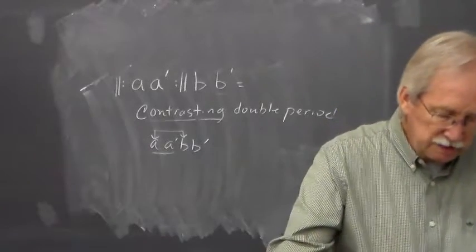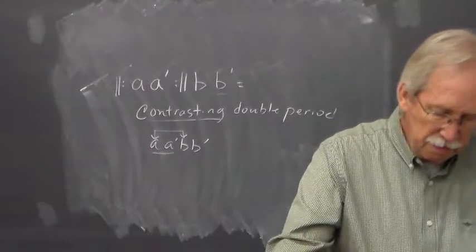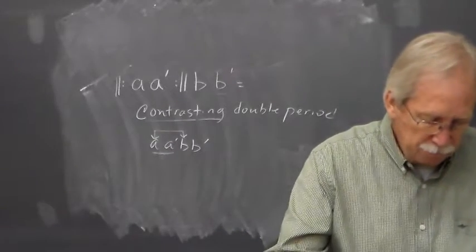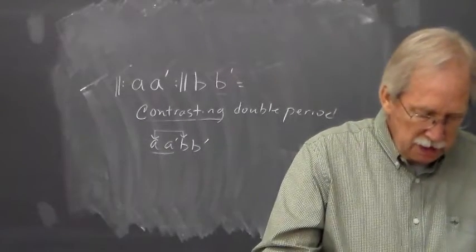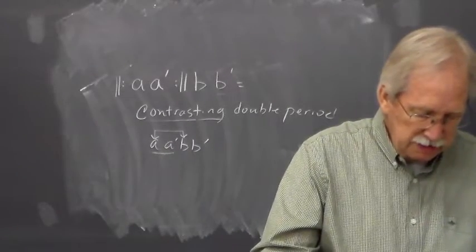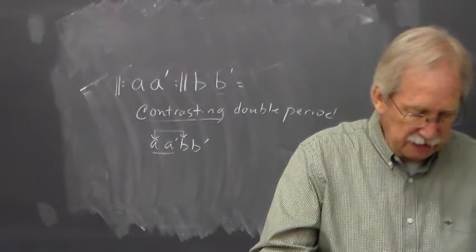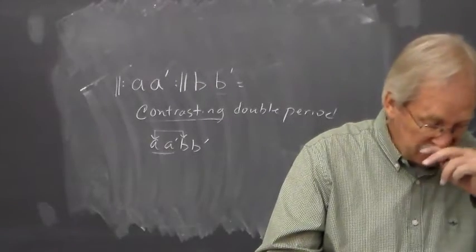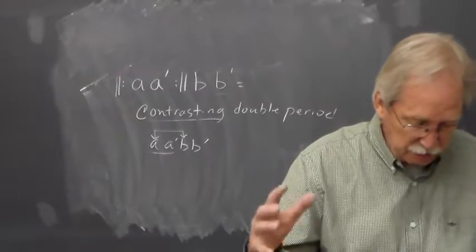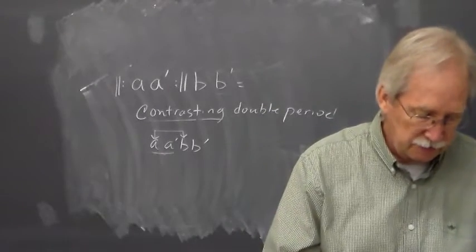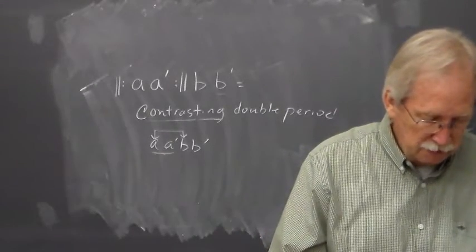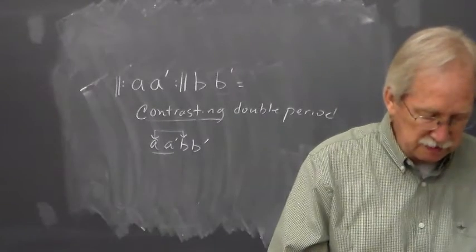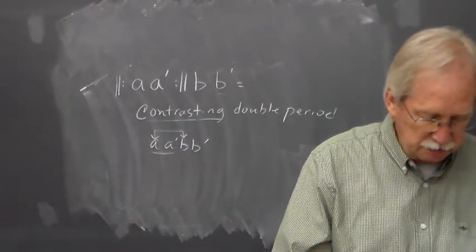The last one, number 177, is a contrasting period. The third phrase and the beginning of the first phrase — those first four measures — are contrasting. So yeah, that's what that would be, a contrasting period.